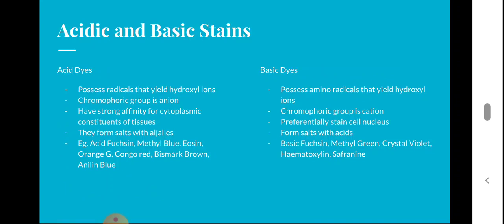In acidic dyes, they possess radicals that yield hydroxyl ions, the chromophore group is an anion, and they have strong affinity for cytoplasmic constituents of tissues; they form salts with alkalies. Examples include acid fuchsin, methyl blue, eosin, orange G, bismarck brown, and aniline blue. In basic dyes, the chromophore group is a cation; they preferentially stain the cell nucleus and form salts with acids. Examples include basic fuchsin, methyl green, crystal violet, hematoxylin, and safranin.